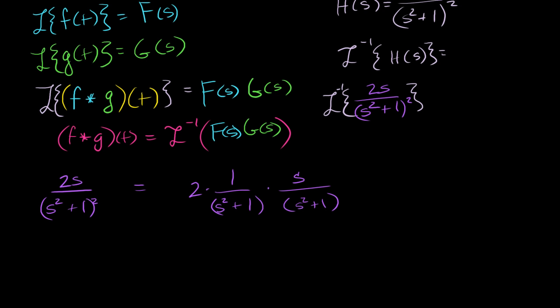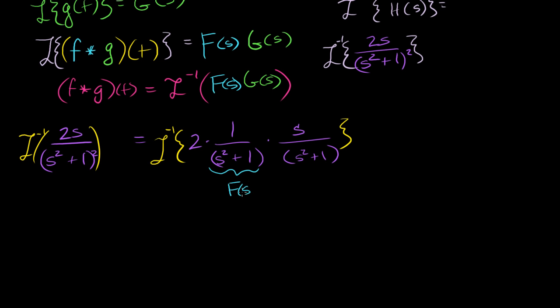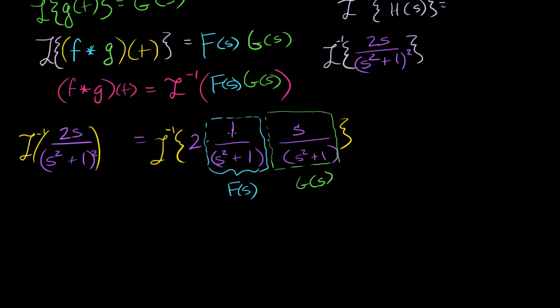So taking the inverse Laplace transform of the original expression is the same as taking the inverse Laplace transform of this factored form. If we draw a dotted line around the first factor, 1 over (s squared plus 1), that is the Laplace transform of sine of t — so f of t equals sine of t. And if we draw a box around s over (s squared plus 1), that is the Laplace transform of cosine of t — so g of t equals cosine of t.